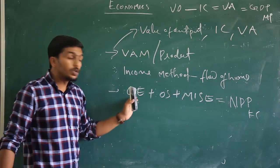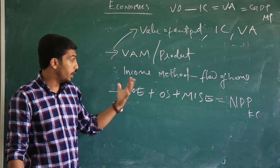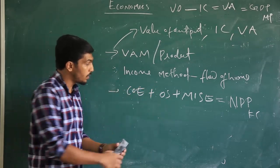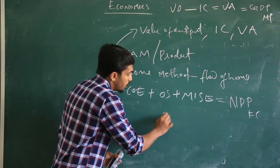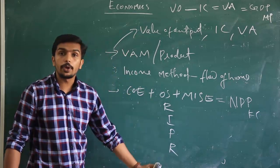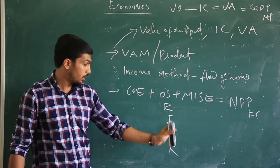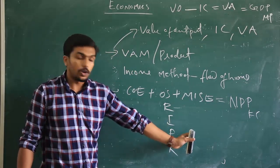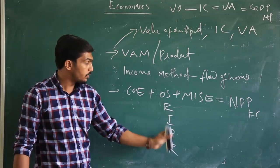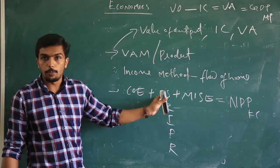There are many variables used to estimate compensation of employees, such as salaries, wages, incentives, and bonuses. Operating surplus is mainly classified into four categories: rent, interest, profit, and royalty. Rent is the return on land, interest is the return on capital, profit is the return to organizers or enterprises, and royalty. These four factors are considered as the operating surplus values. Adding these four values together gives the total income from properties.